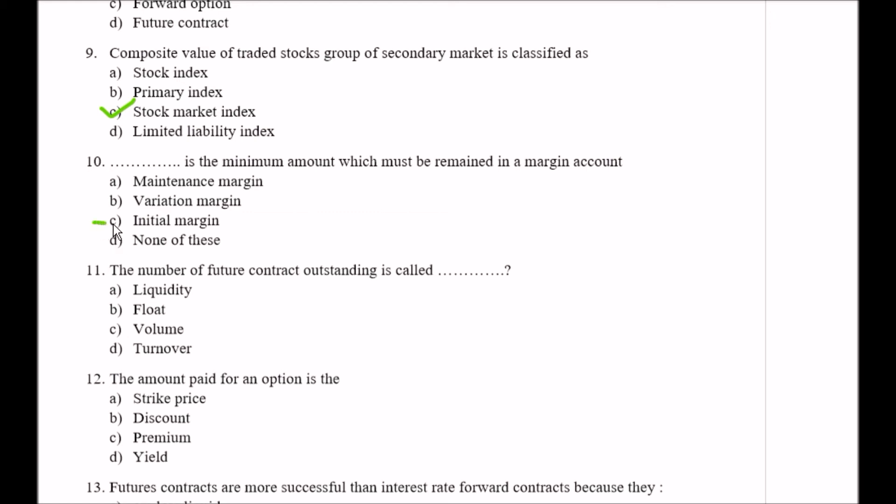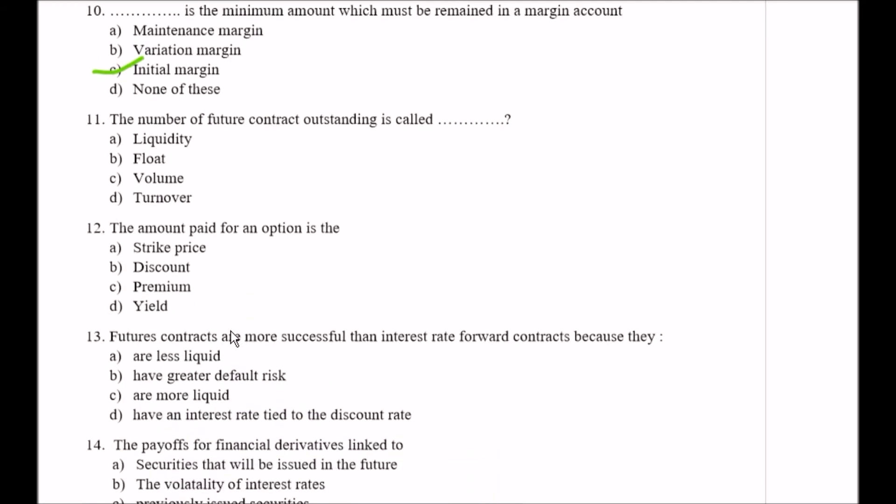Question number eleven: The number of future contract outstanding is called Option A liquidity, Option B float, Option C volume, Option D turnover. So here your right option is Option A, that is liquidity.